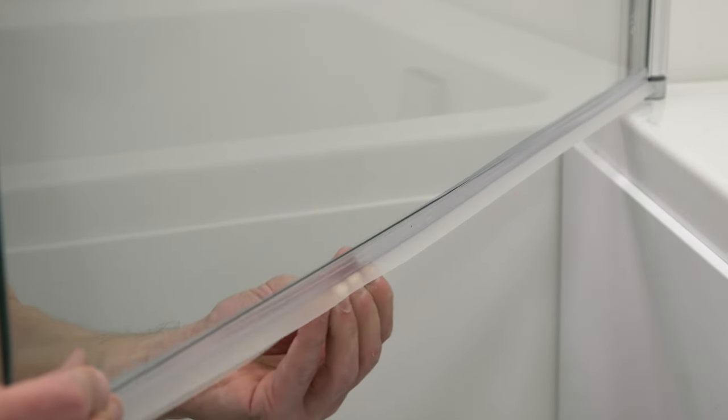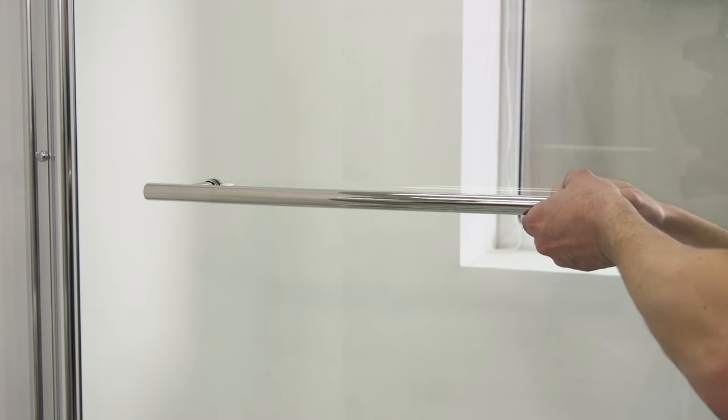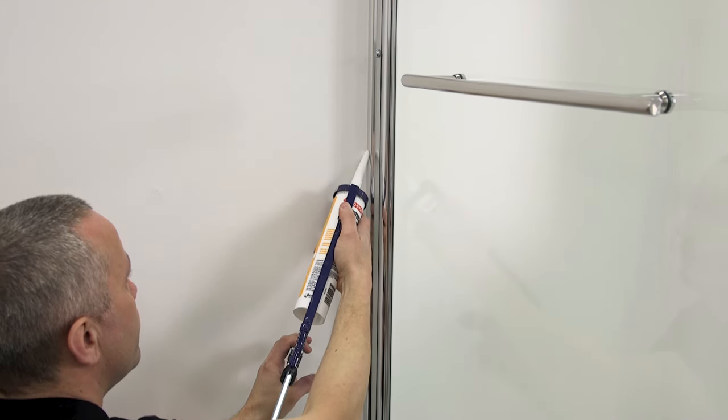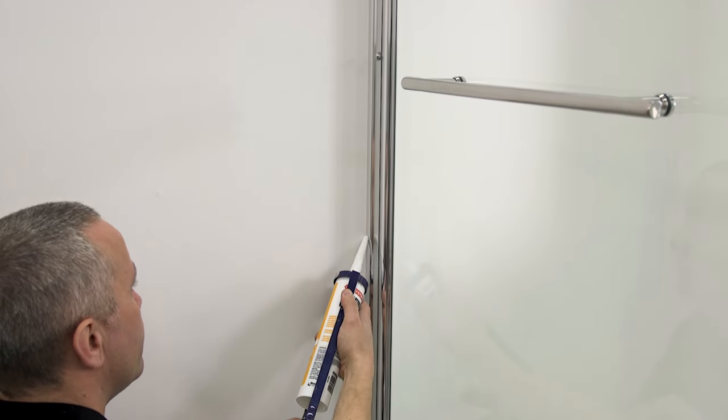Fit the seal to the bottom of your bath screen. If your screen comes with a handle or towel rail, fit this now. Finish with a bead of silicone sealant down the outside edge of the wall channel.